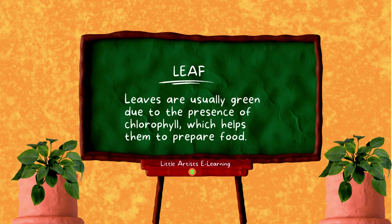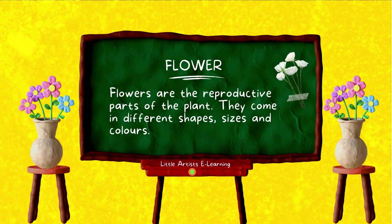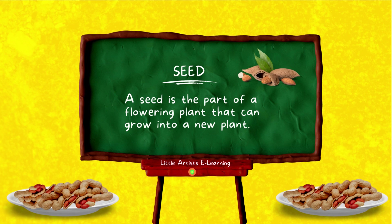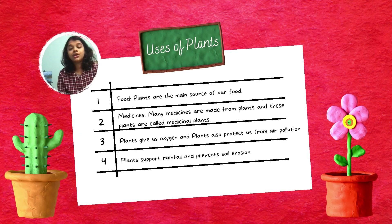Leaves are usually green due to the presence of chlorophyll, which helps them to prepare food. Flowers are the reproductive parts of the plant and come in different shapes, sizes, and colors. A fruit is the part of a flowering plant that contains seeds. A seed is the part of a flowering plant that can grow into a new plant.